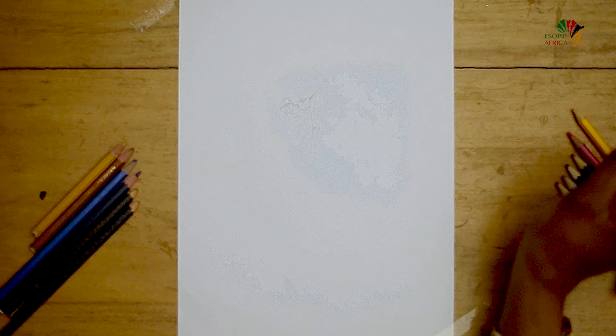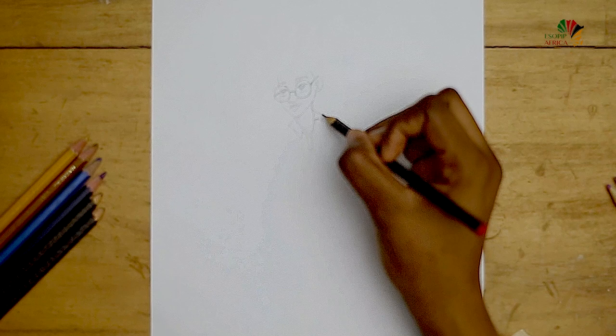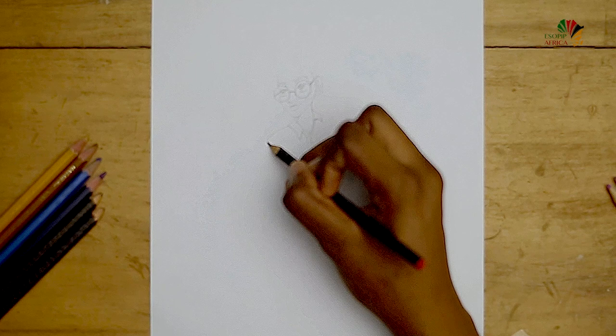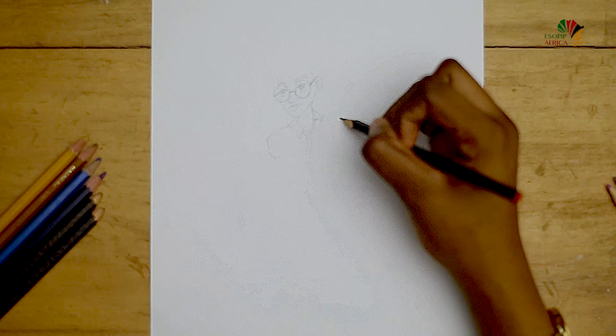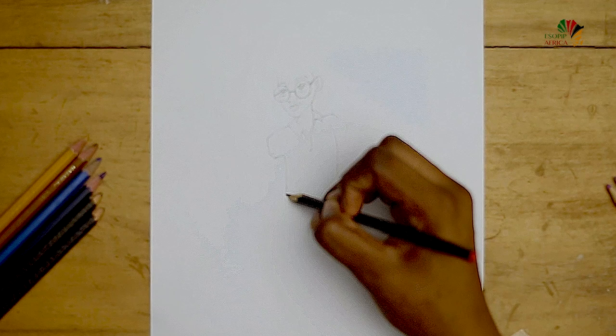Now we're going to go to her torso and her lower body. Let's draw her shirt. Draw a long line indicating the torso of our subject, stopping midway so that we can draw the lower body.